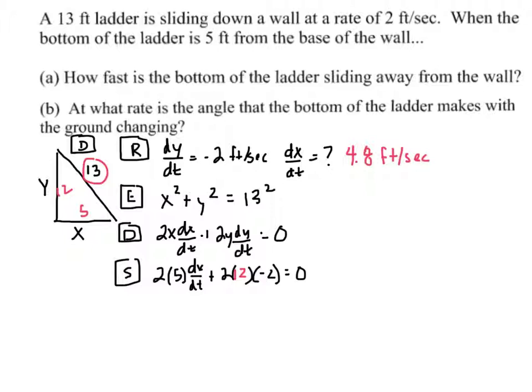Next, at what rate is the angle of the bottom of the ladder makes with the ground? So now we're redoing this a little bit, and we're looking for theta. So I'm going to kind of put my work like this. Okay, now the rates, I'm going to kind of extend. Again, we know those dy dt and dx dt and dz dt. Now I'm looking for d theta dt.